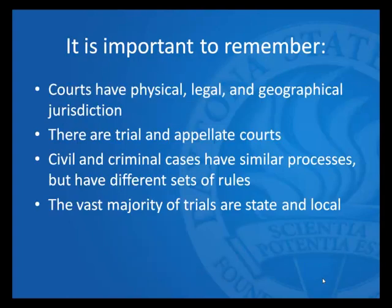It's important to remember a few key points. Courts have physical jurisdiction — state courts can only practice within their state, federal district courts within their district, and circuit courts within their designated circuit. Courts also have legal jurisdiction, whether general or specialized, which can be based on geography or the physical person. There are trial and appellate courts: trial courts are finders of fact, and appellate courts review the legal actions of trial courts. Civil and criminal cases have similar processes but different procedural rules. The vast majority of trials are state and local. That's it for this lecture.